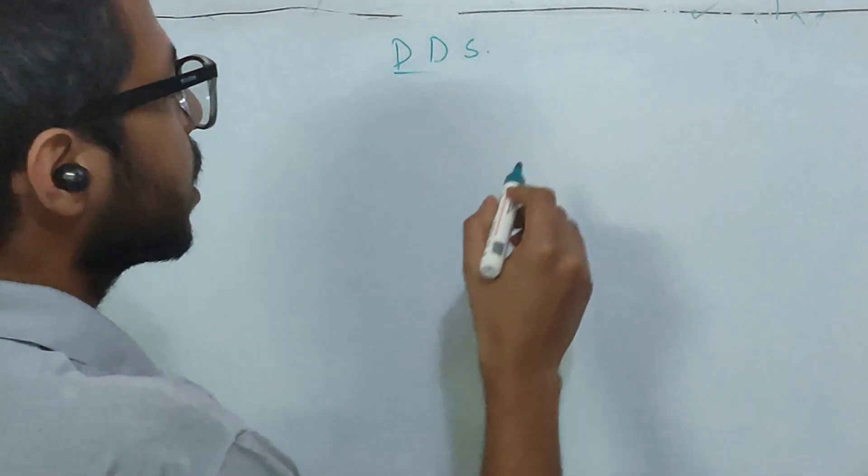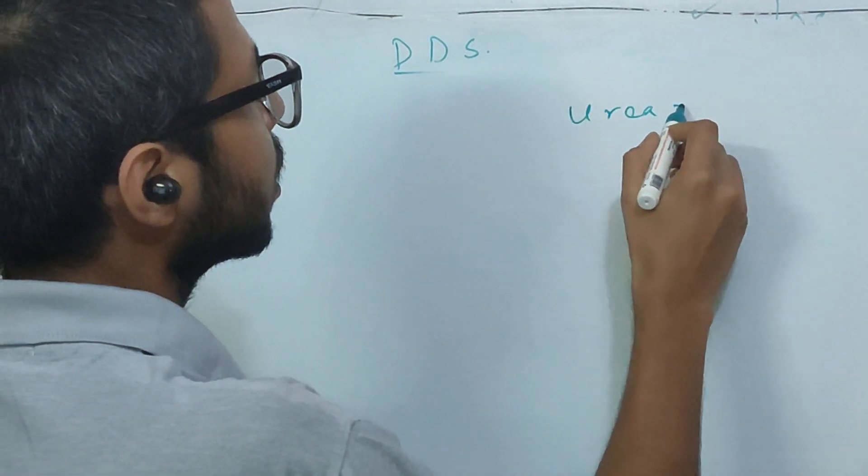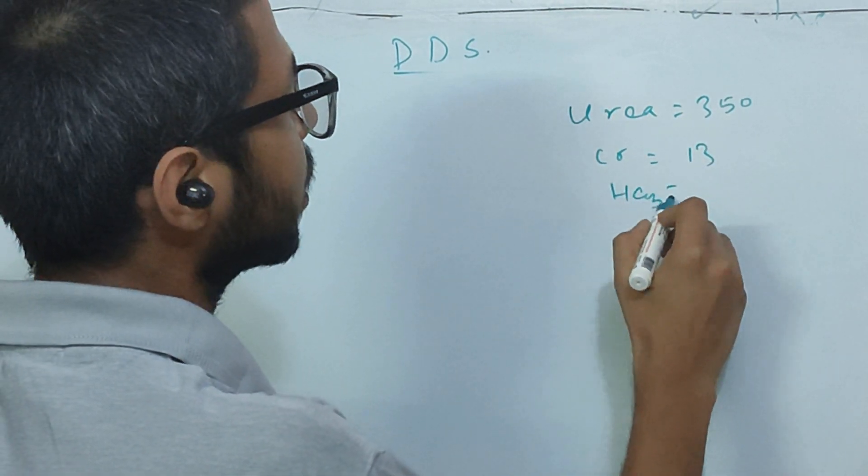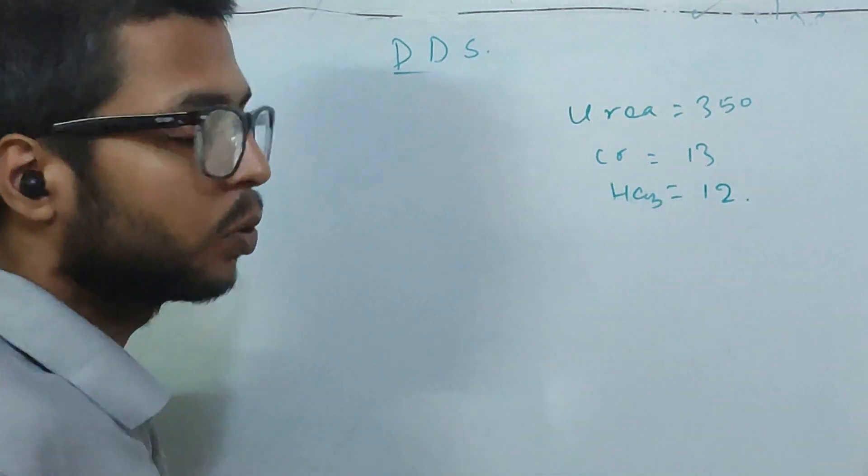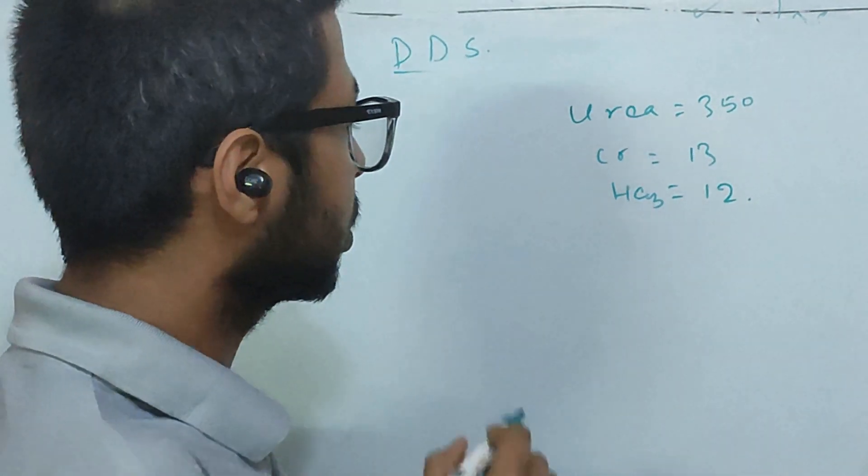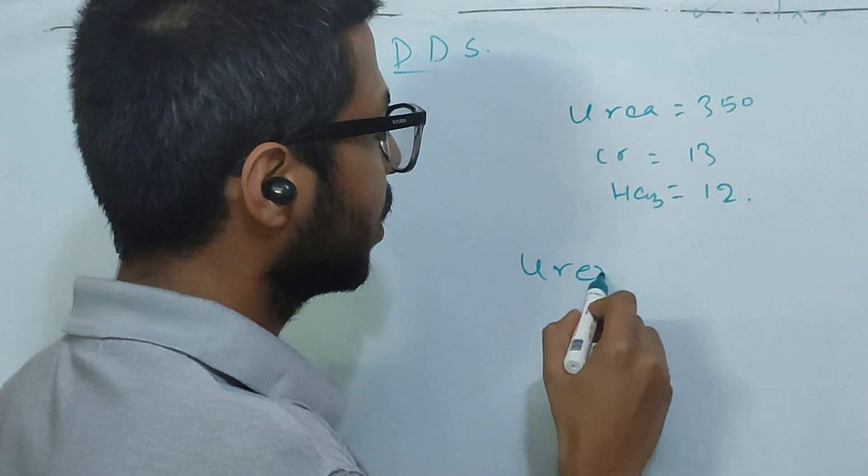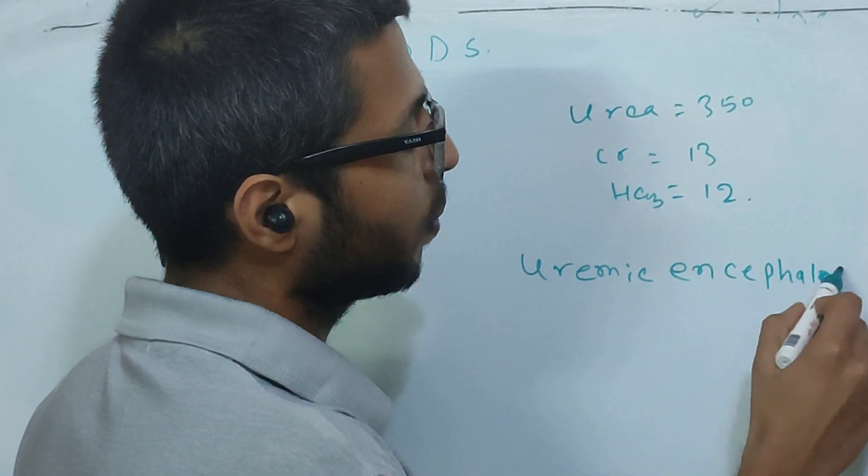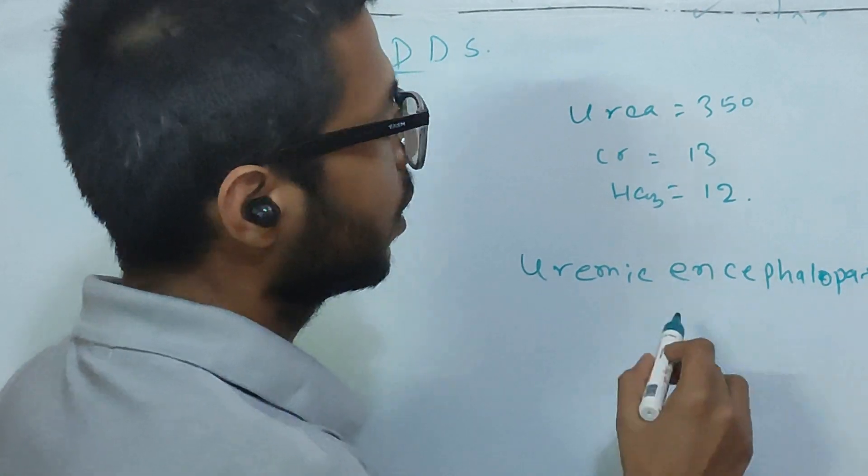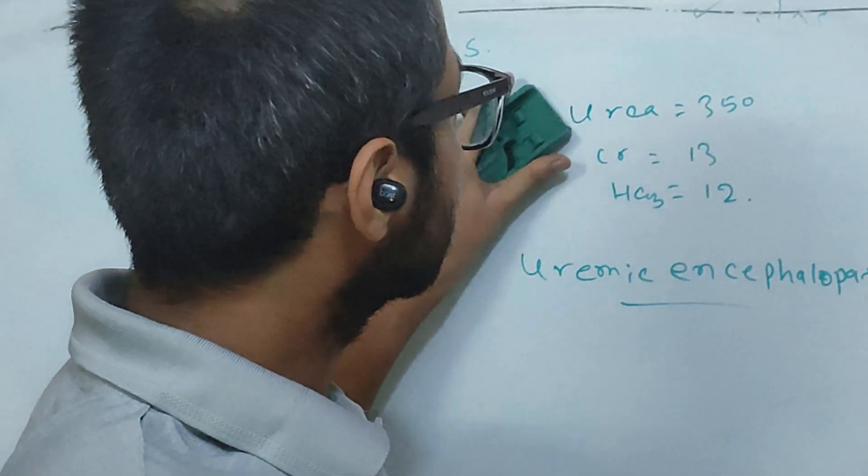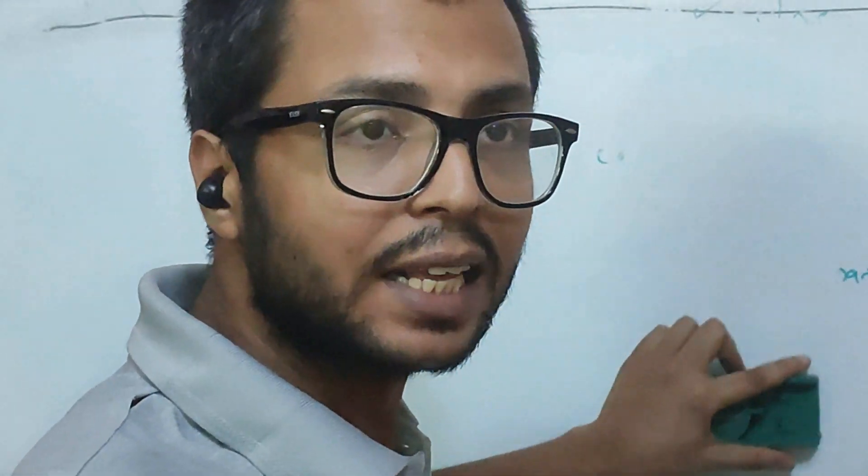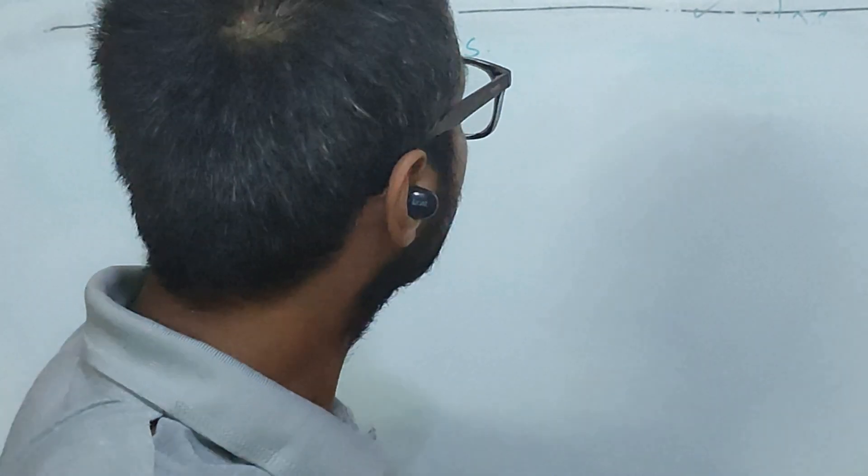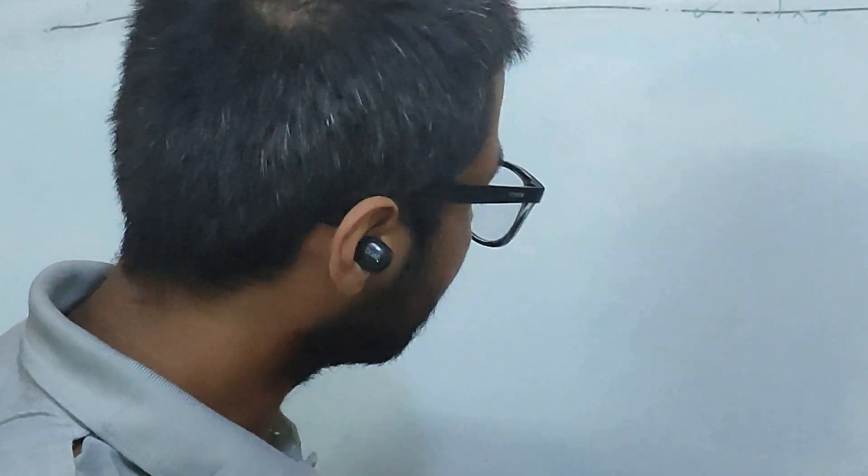On blood analysis, her urea was 350, creatinine was 13, bicarbonate was 12. With this we made a working diagnosis of uremic encephalopathy with metabolic acidosis secondary to chronic kidney disease. As she had never undergone dialysis in the past and she had elevated urea, we took preventive measures to prevent dialysis disequilibrium syndrome.